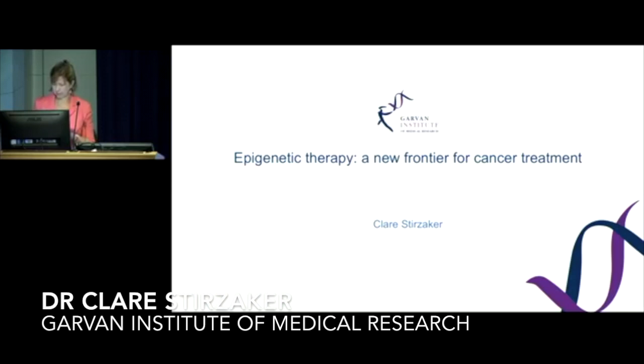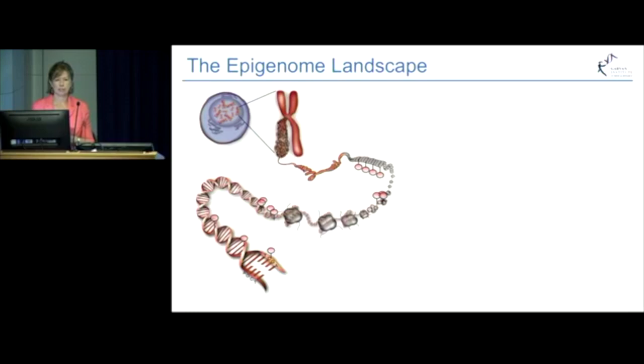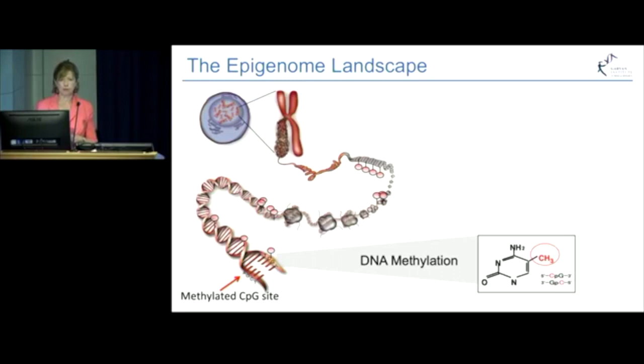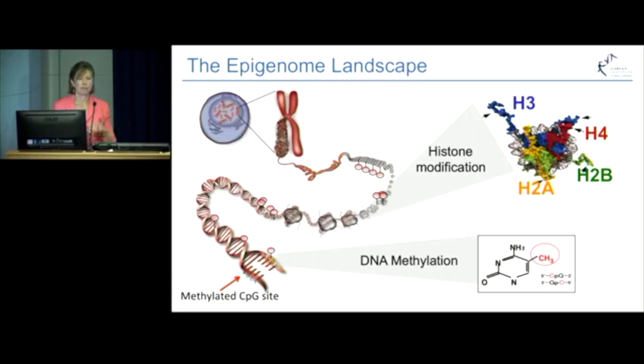If we go back to the beginning, to the slide that Sue showed, looking at the epigenome landscape, today the best-studied epigenetic mechanisms, as we understand, are DNA methylation — which is the addition of a methyl group to the cytosine base — and the histone modifications. The DNA is wrapped on the beads and the string, and this determines whether the chromatin is open and genes are turned on, or it's closed and genes are turned off.